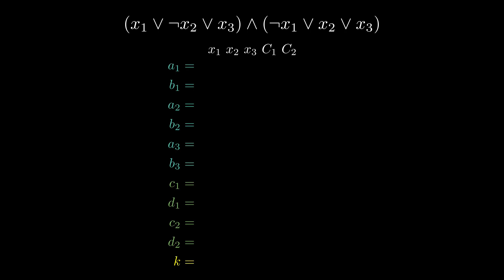Each integer consists of n plus m digits, where n is the number of variables and m is the number of clauses. The a values correspond to the variable x_i, while the b values correspond to the negation of the variable x_i. The digit of a_i associated with x_i is always set to 1, while the digits associated with the remaining variables are set to 0. The same holds for b_i.